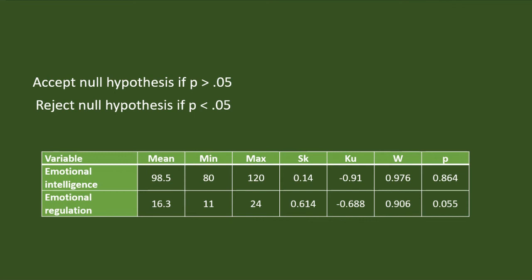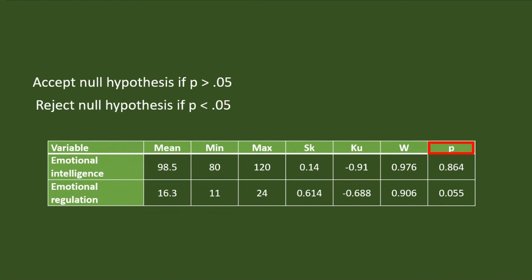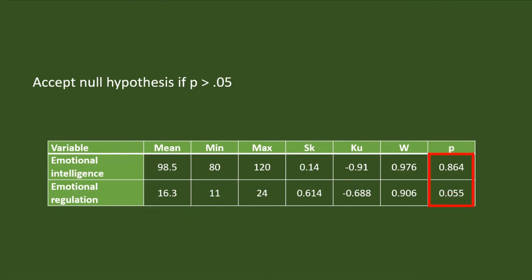We know that we accept the null hypothesis if p is greater than 0.05, and reject it if p is less than 0.05. In the table, the Shapiro-Wilk coefficient for emotional intelligence is 0.976 and for emotional regulation is 0.906. The p-value for emotional intelligence is 0.864, which is greater than 0.05. For emotional regulation, p is 0.055, which is also greater than 0.05.